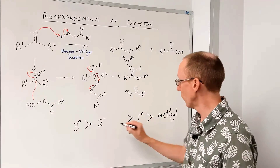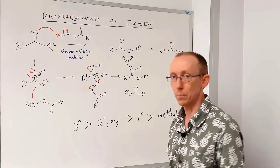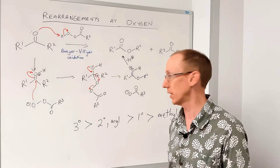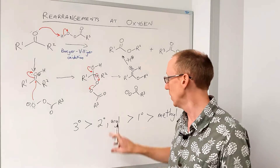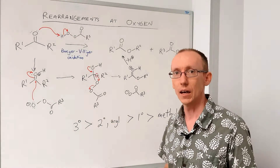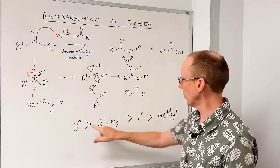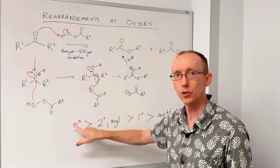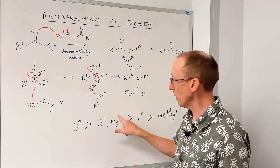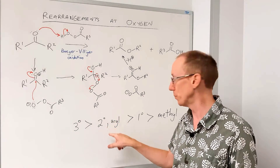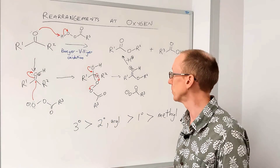There's one little wrinkle in this, and that is that aryl groups — like benzene rings and similar rings — are around the same migratory aptitude as secondary alkyl groups. Most of this trend is related to how well that group can stabilise a positive or partial positive charge. We might like to think about why aryl groups fall in this region, amongst the secondary alkyl groups.